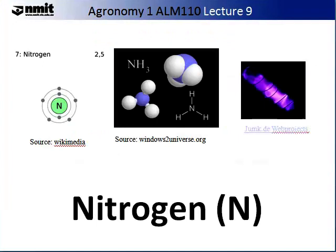Let us begin with nitrogen, the macronutrient. The image on the left-hand side demonstrates the element composition of nitrogen. It has an atomic number of 7. Nitrogen is a gas and clear; however, if you place nitrogen in a vial and put a voltage across it, you get a beautiful purple colour. The image in the centre of the slide shows nitrogen incorporated into the compound NH3.